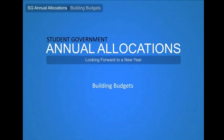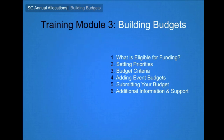Welcome to the third training module for Student Government's Annual Allocations. In this module, we'll take a look at the process for developing your program budgets, including an overview of eligible events and programs, prioritizing your budgets, the criteria the committee uses in evaluating budgets, adding budgets to your annual application, and how to submit your final budget.